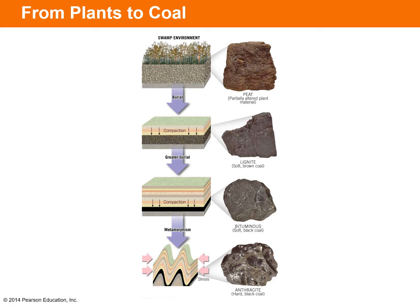This diagram shows the coal formation process. Starting with a swamp environment, biological material gets buried and partially altered, and plant material lithifies together to form peat. Buried deeper, it forms lignite — a soft, brown coal. Deeper still, it forms bituminous coal, which is soft and typically black. Buried at the greatest depths, it forms anthracite, the highest grade coal — very hard and black.